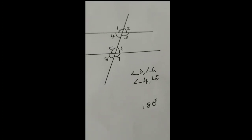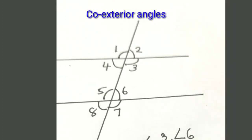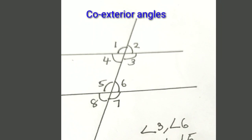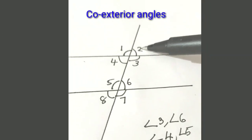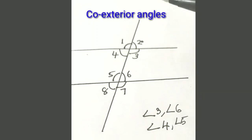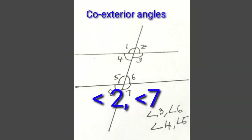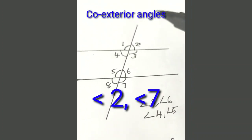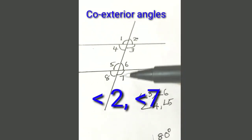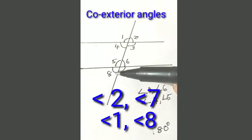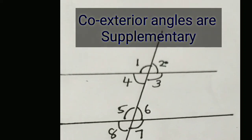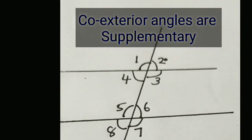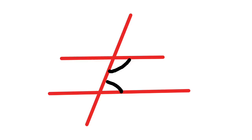Here is the term: exterior angles formed on the same side of the slanted line are called co-exterior angles. You can see angle 2 is an exterior angle, and on the same side you can see angle 7, so angle 2 and angle 7 are co-exterior angles. Another pair is angle 1 and angle 8. The sum of co-exterior angles is also 180 degrees, so co-exterior angles are supplementary.